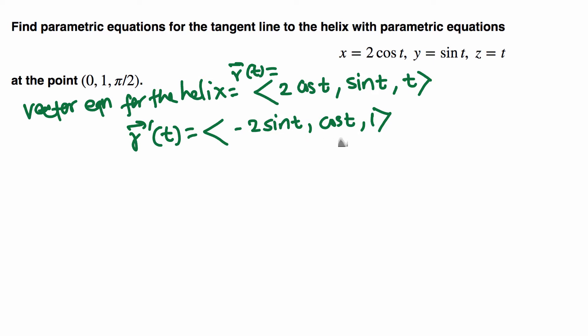If we take this (0, 1, π/2) here, we need to find the value of parameter t. Just looking at 0, 2 cosine t, look at the third component, third point π/2 equals t. So parameter value t is in fact π/2.